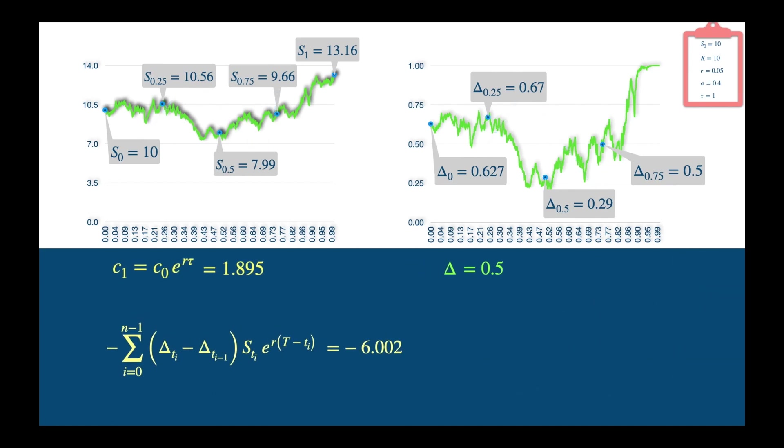So now we have the three components. The first one is the cash flows from the investment of the option premium. We then have the net sum of cash flows resulting from the rebalancing of delta hedge. And we own 0.5 units of the stock. Notice this holding was decided at the observation prior to maturity, because we can't see the future. And we will sell these units at the price observed on the maturity date, which is 13.16. So we will get 6.58.